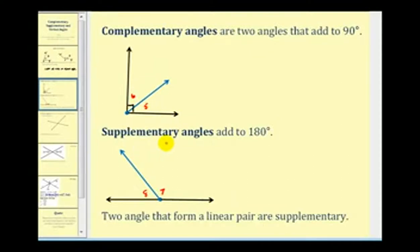Supplementary angles add to 180 degrees. If the angles are adjacent, as we see here, they form a straight line, and therefore are also called a linear pair. Angle seven and angle eight are supplementary angles.